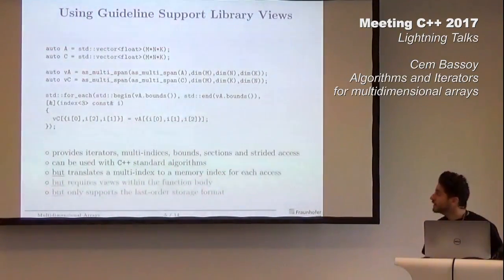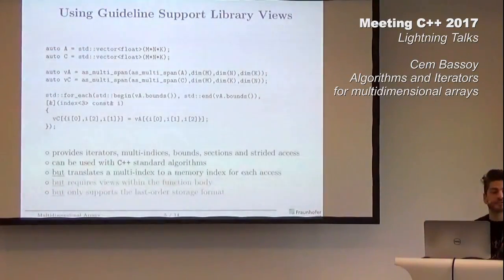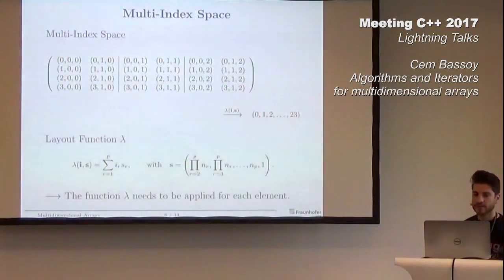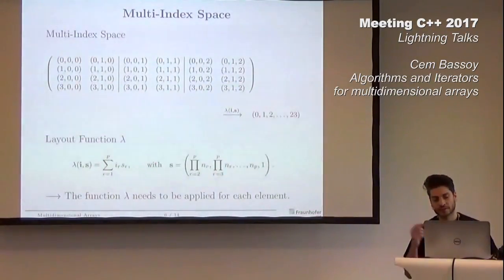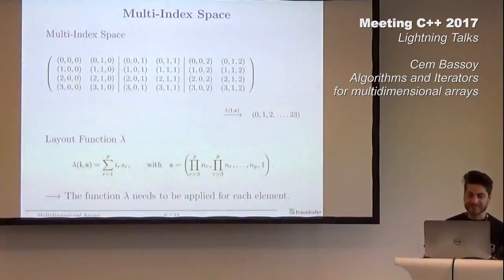What does that mean? You have a multi-index space for each array. The array operates within that index space and for each element you need to apply a layout function. Whenever you access an element, it needs to be transformed by an inner product into the relative memory space, and this has to be done for every element.